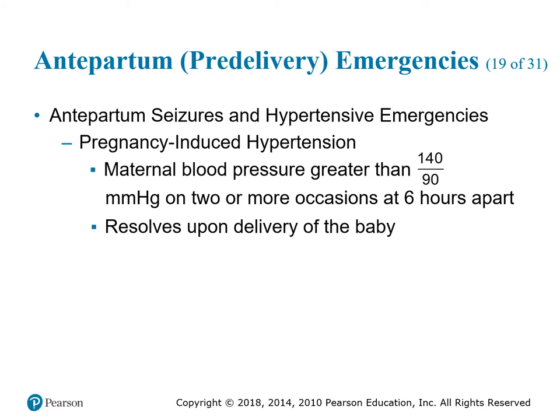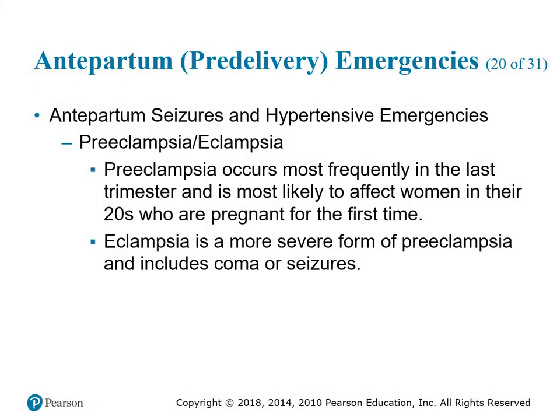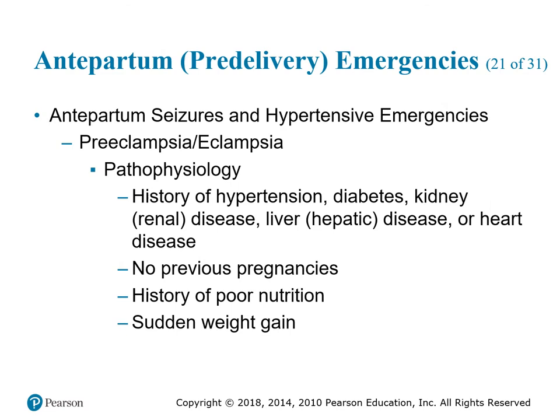Pregnancy-induced hypertension is when maternal blood pressure is greater than 140 over 90 mmHg on two or more occasions at least six hours apart. This resolves upon delivery of the baby. Pre-eclampsia occurs most often in the last trimester and is most likely to affect women in their 20s who are pregnant for the first time. Eclampsia is the more severe form and includes coma or seizures. The easy way to remember: pre-eclampsia gives you hypertension; once you have a seizure, you call it eclampsia.